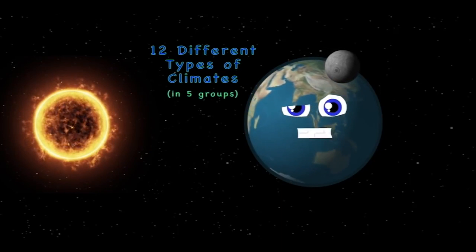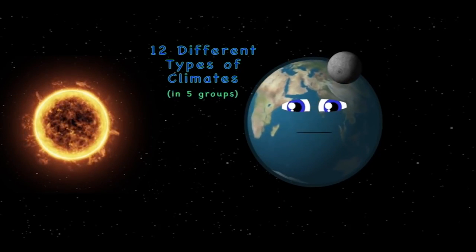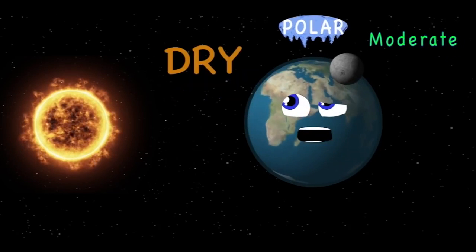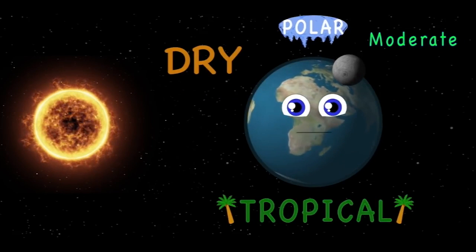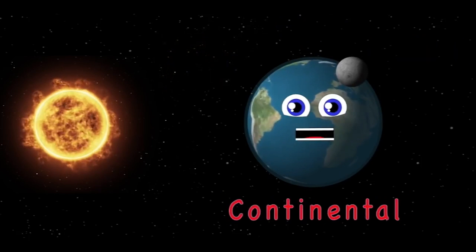There are 12 different types of climates that exist on me: moderate, polar, dry, and tropical are four groups you see. Then there is continental.